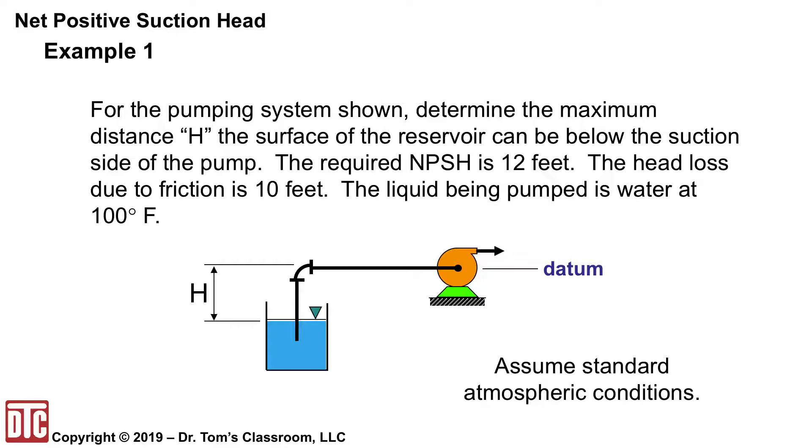the head loss due to friction is given to you. You've already calculated the major, minor, all of that, 10 feet. That might be a little high, but 10 feet. And the liquid that's being pumped is water at 100 degrees F and assume standard conditions here. So we want to figure out what is that maximum H if the required is 12 feet.